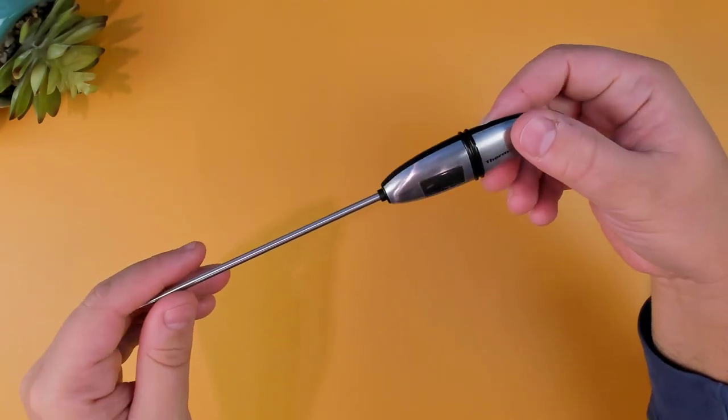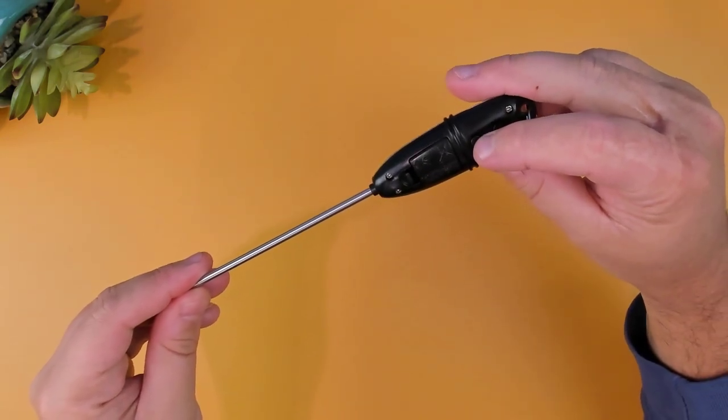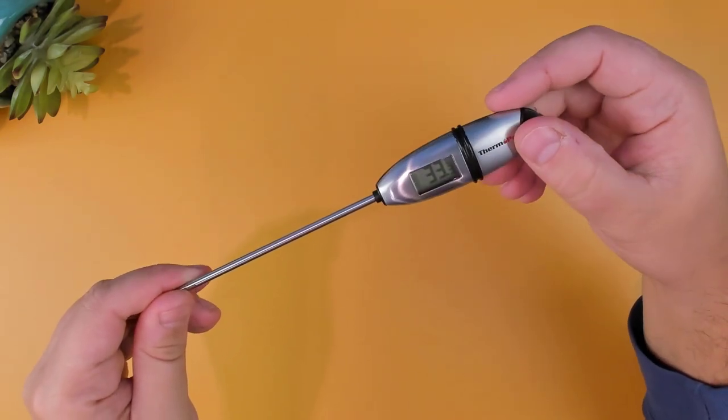The thermometer can output readings in either Fahrenheit or Celsius by pressing the button on the opposite side of the display.